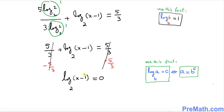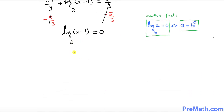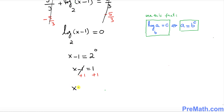Now we convert this logarithmic equation to an exponential one. This gives x minus 1 equals 2 to the power 0. Since 2^0 is always 1, we add 1 to both sides, so x equals 2, which is our solution.